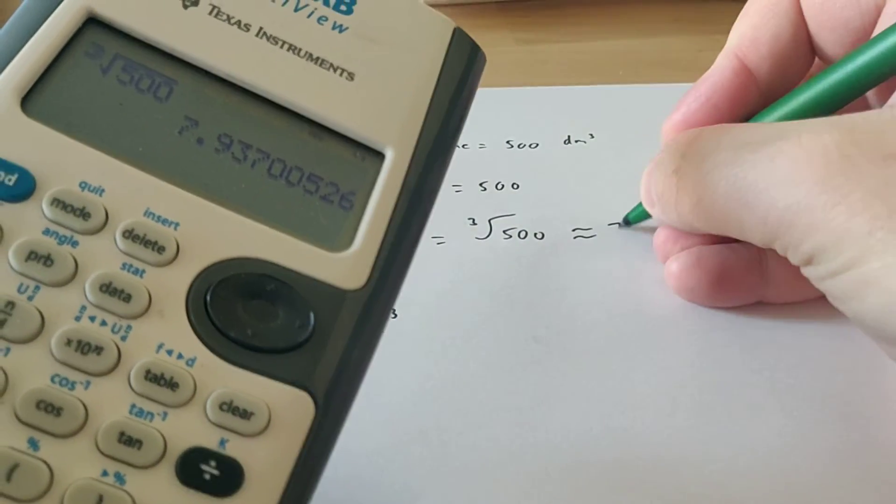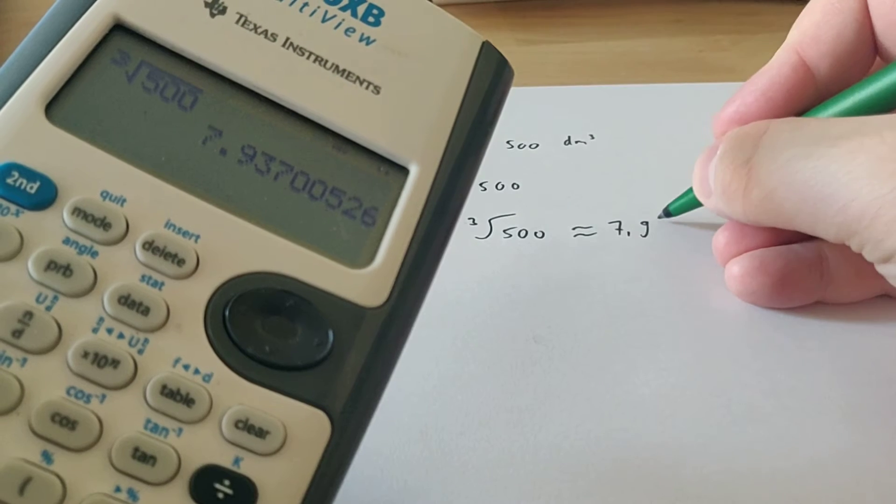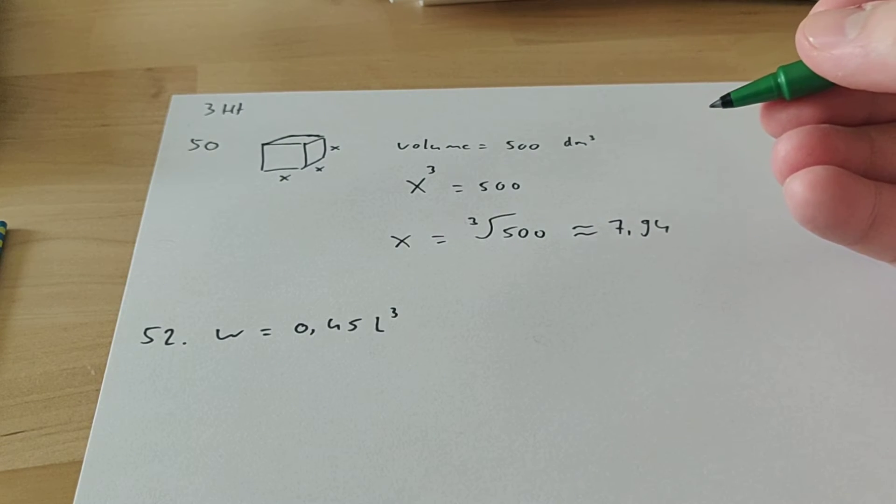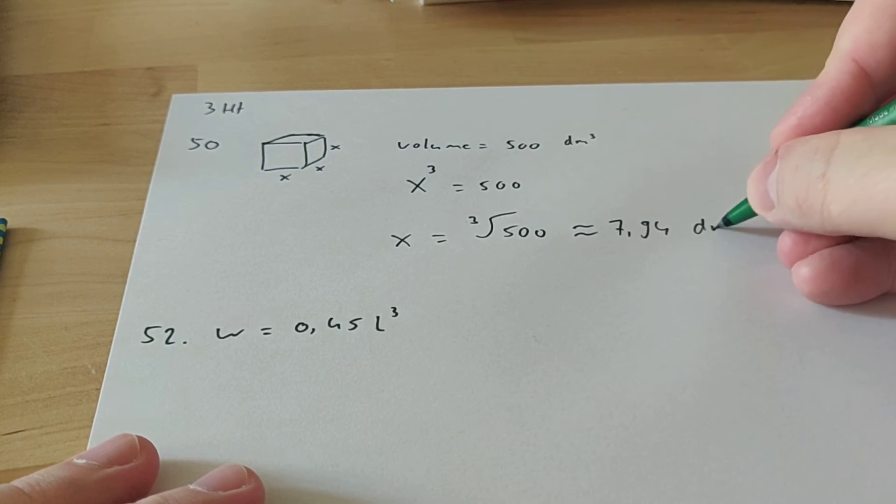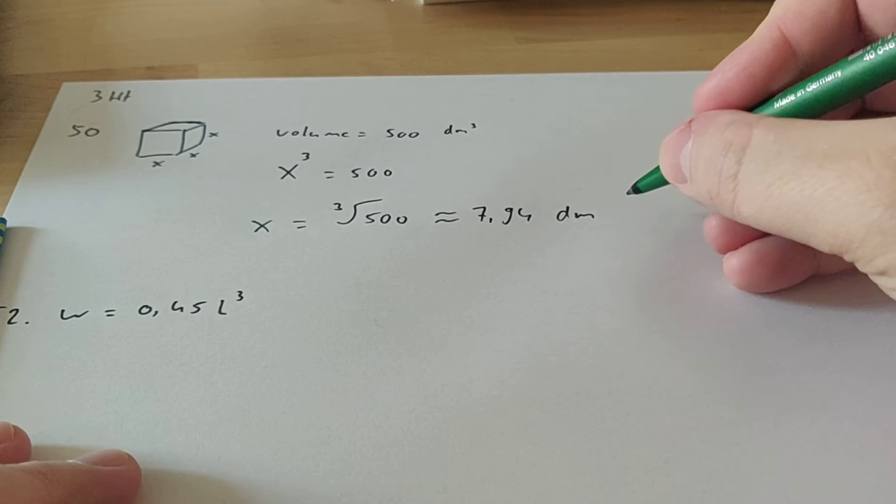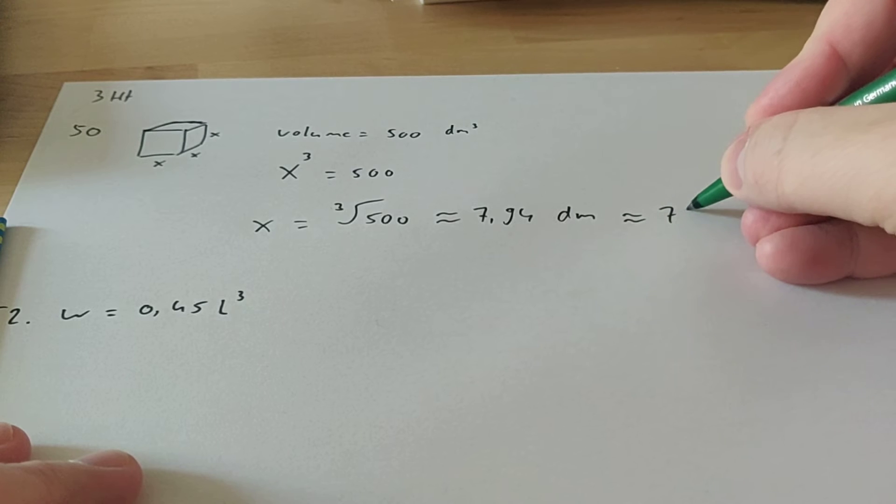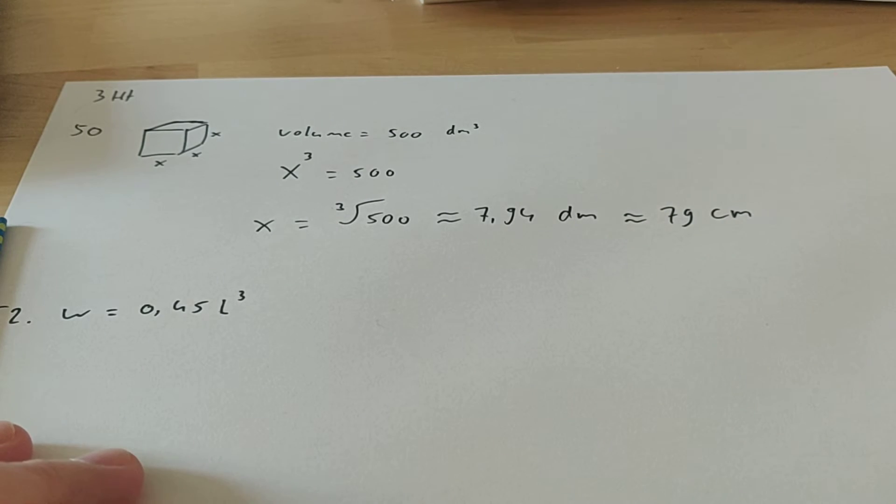So let me write that down. So it's actually 7.94 rounded off. Then let's read the question again. Because it says, calculate the height of the box in centimeters. Now this is in decimeters, so if we round that off to whole centimeters, we get 79 centimeters.